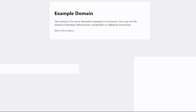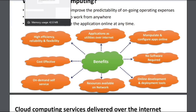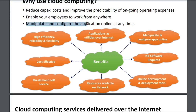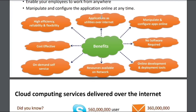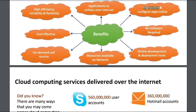For example, with a sample website launched on the cloud, if we want to make changes we do not need to take the service down — we can directly make changes and deploy our project over the internet with no downtime. Additional features include: highly efficient, reliable, and flexible applications over the internet; the ability to configure apps online; and it is cost-effective.